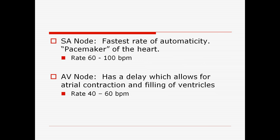The AV node has a delay. Once that electrical impulse leaves the SA node, it runs down and hits the AV node where it slows down. This delay prevents the impulse from hitting the Purkinje fibers and the bundle of His too quickly. The normal rate through the AV node is about 40 to 60 beats per minute.